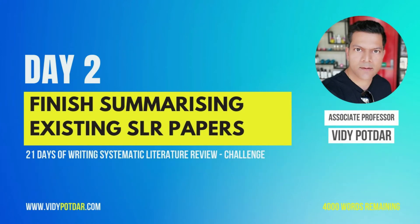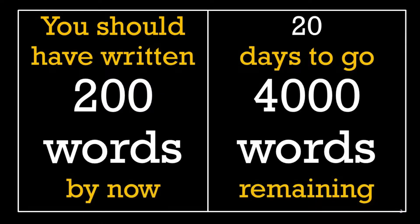The aim or the objective for today's session is to finish the summary of the existing SLR papers. By now, you should have written 200 words towards your systematic literature review paper. If you have not, then you have to catch up on your writing. That also means you have 4,000 words to go and 20 days to go to finish your article.